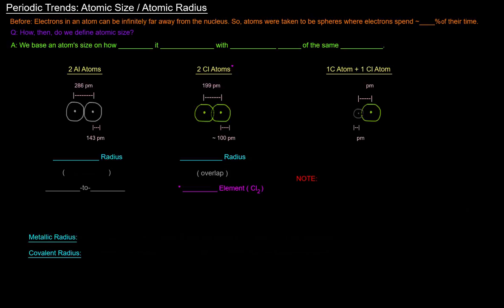Before we mentioned that electrons in an atom can be infinitely far away from the nucleus, so what we ended up saying was that atoms were taken to be spheres where the electrons spend 90% of their time. That way we can at least imagine an atom to be sort of a ball with a surface.